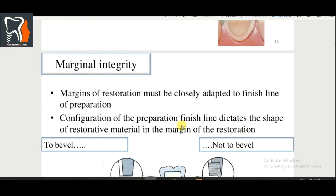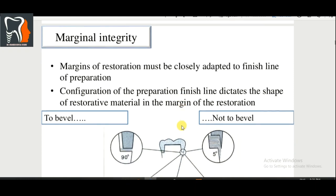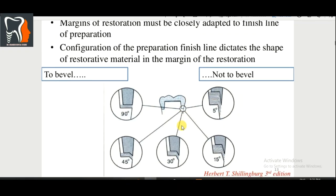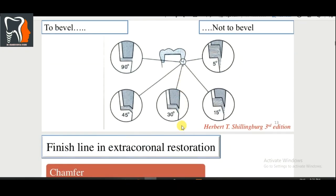Marginal integrity means the margin of the restoration must closely adapt to the finish line of the preparation. The configuration of the finish line dictates the shape of the restorative material at the margin. So what angle is there — chamfer or shoulder? Now we are going to talk about the types of finish lines.